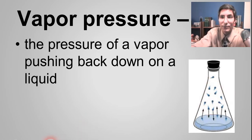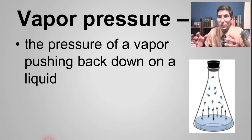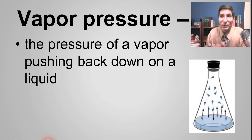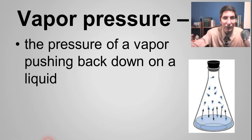Every liquid has a vapor pressure. If a liquid evaporates a lot, you're going to have a lot of vapor, so you have a lot of vapor pressure. Some liquids don't evaporate very well, so they don't produce a lot of vapor and you have a low vapor pressure.